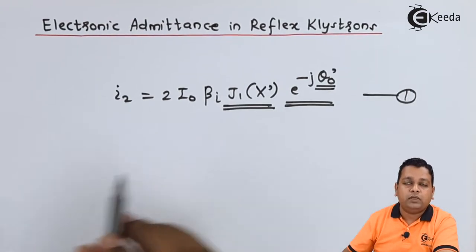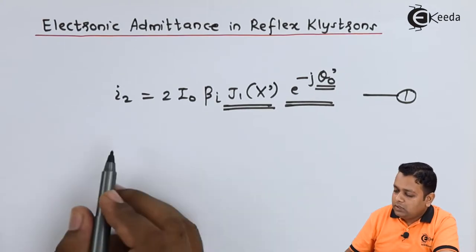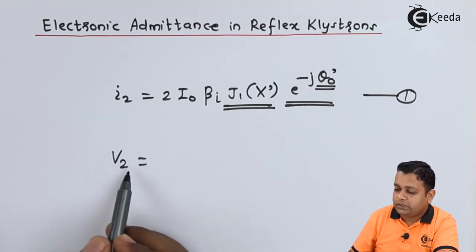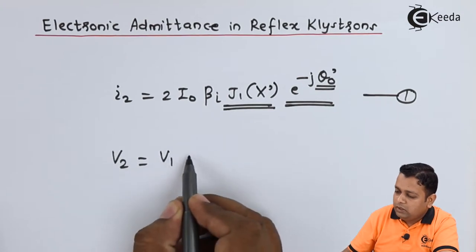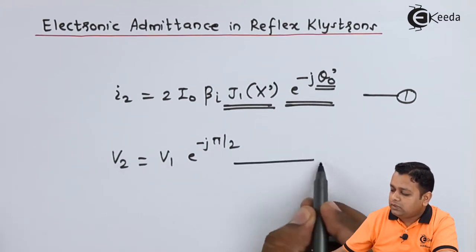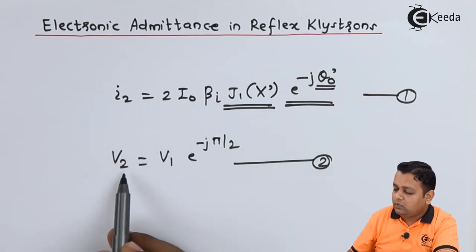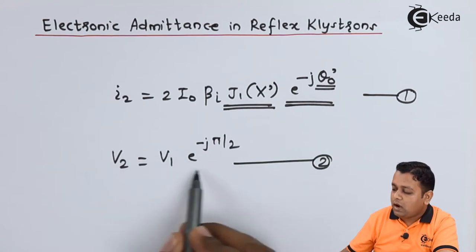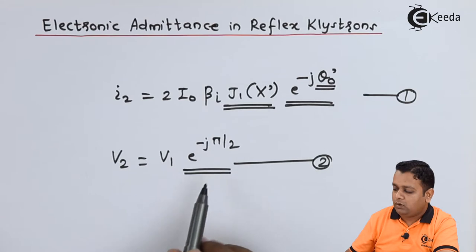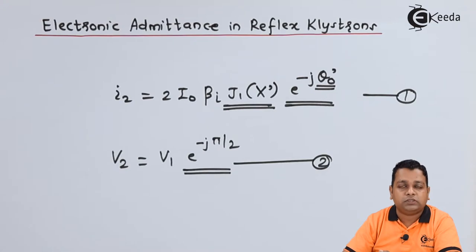Similarly, we can also formulate the induced voltage. The induced voltage at the output cavity is denoted Vx2 and is given as V1 * e^(−jπ/2) — this is equation number 2. Equation 1 is for the induced current and equation 2 is for the induced voltage in phasor form, corresponding to the retarding phase of the cavity.